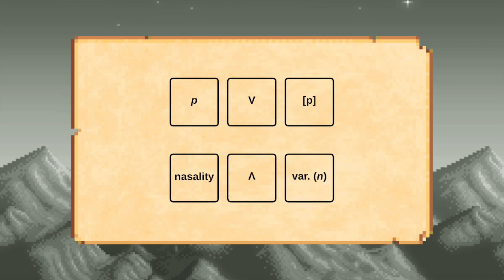As you can see in this example, taken from Hjelmslev's essay 'The Stratification of Language,' we can write equations with these. In the first case, the manifestatum is the form P, whilst the manifestant is the sound P. In the second, nasality manifests a variant of N, like you find in French.